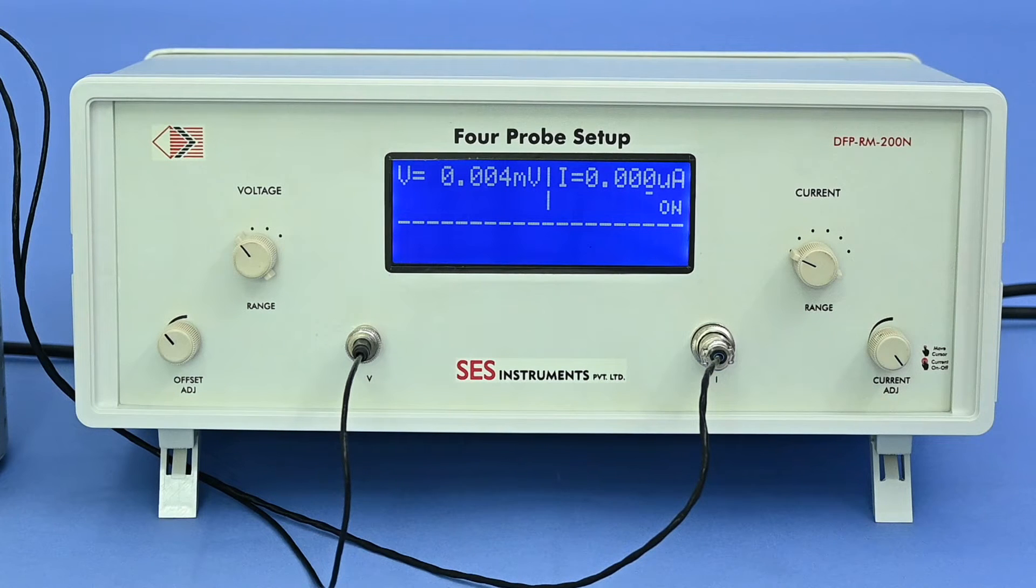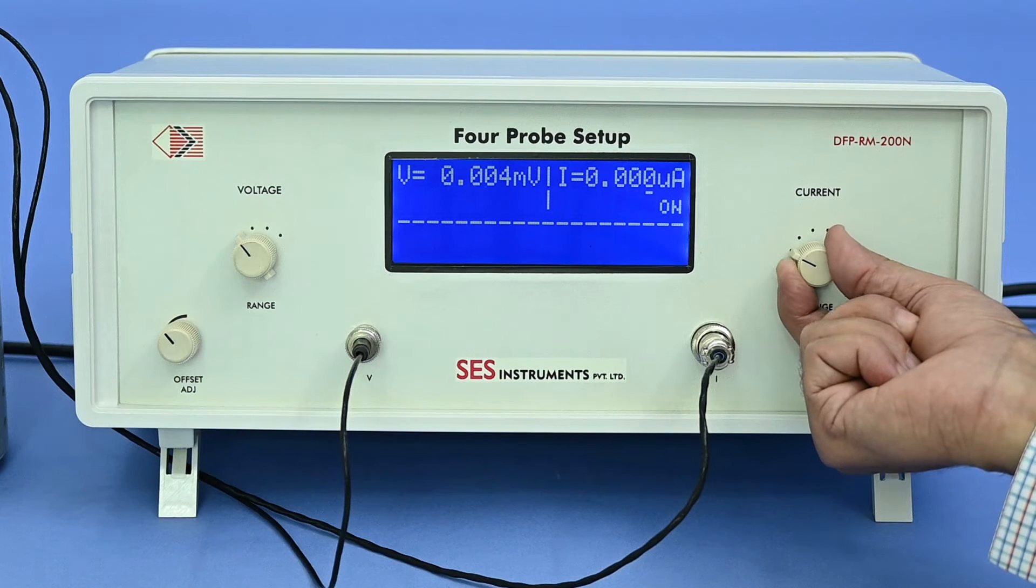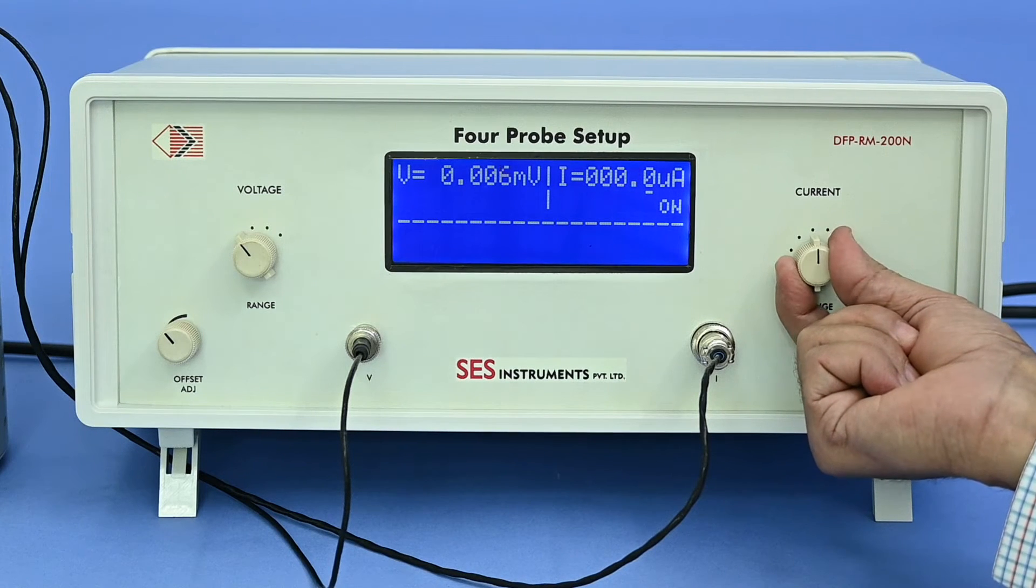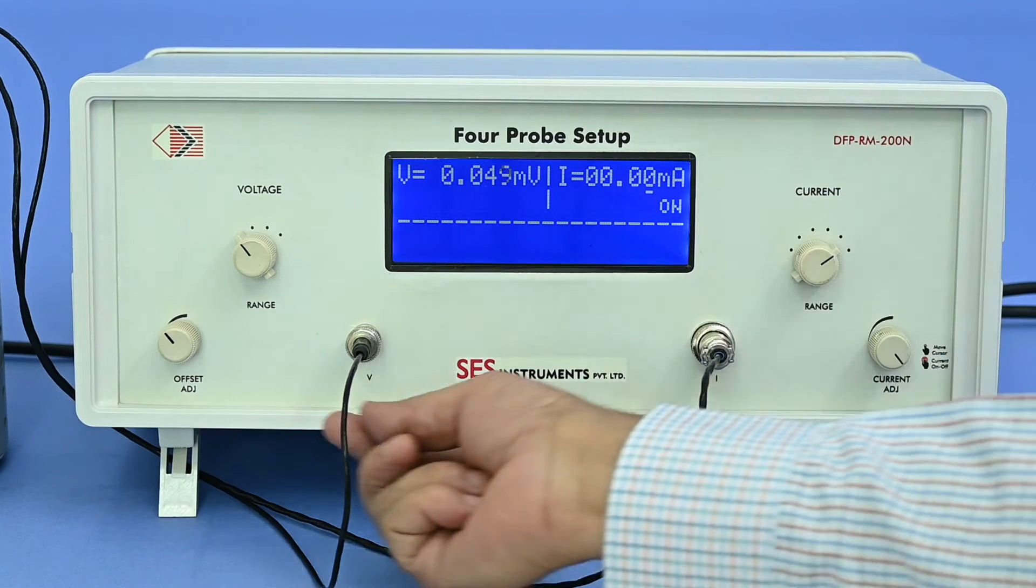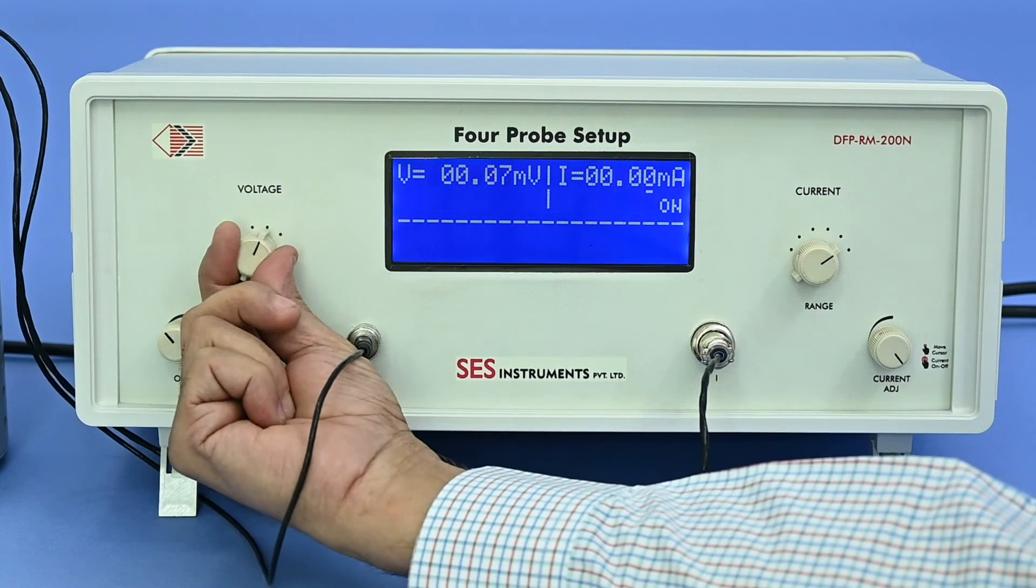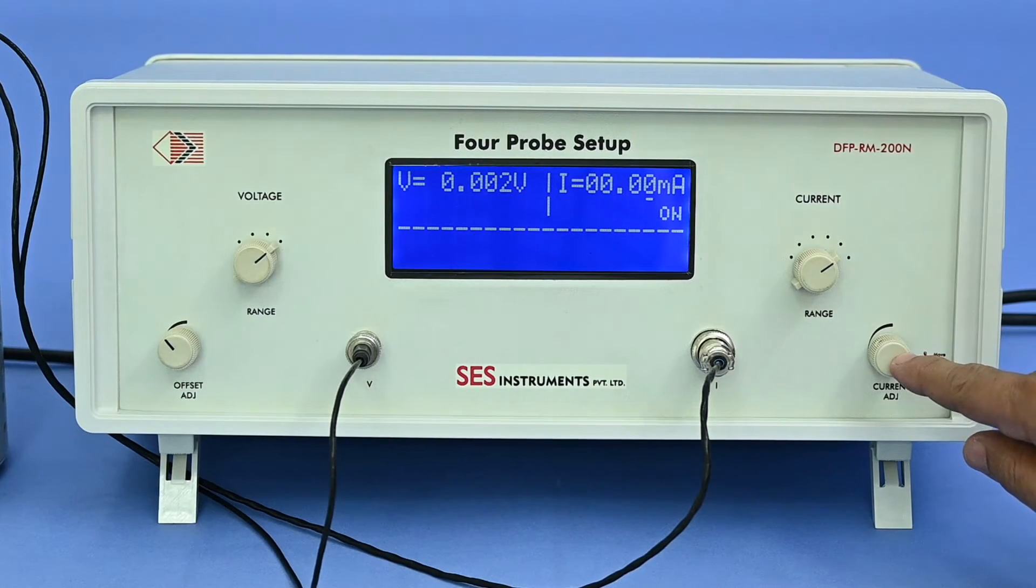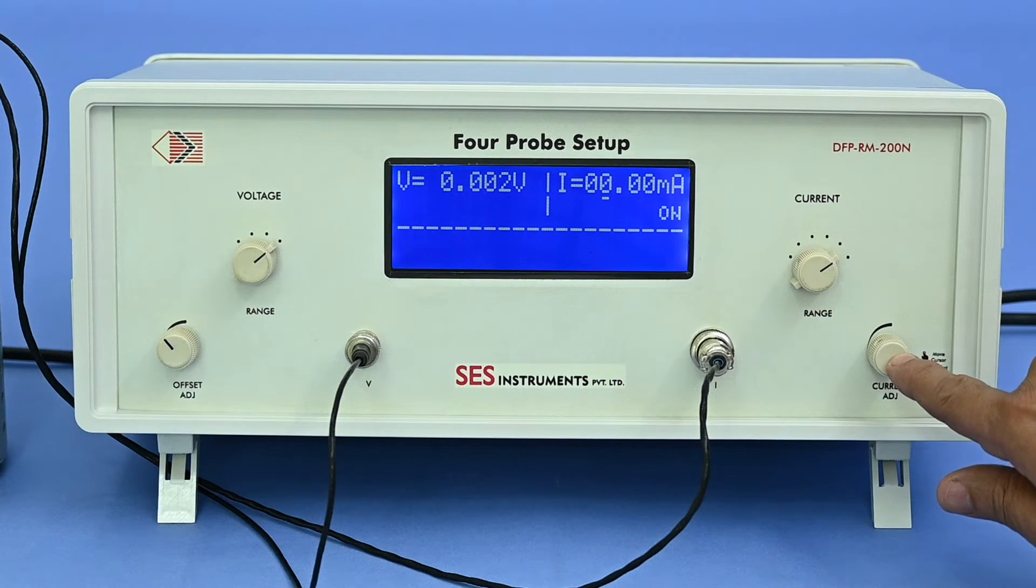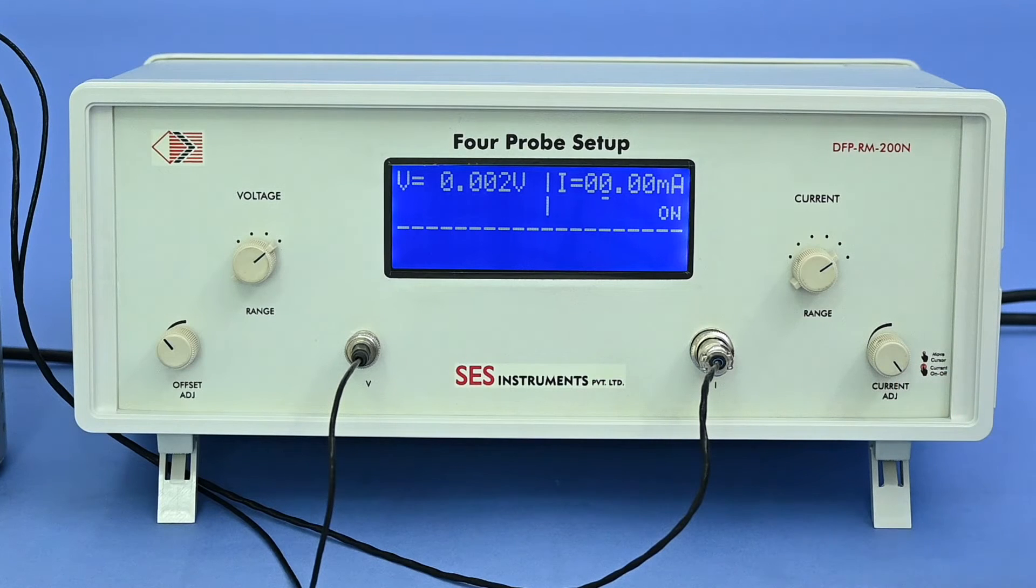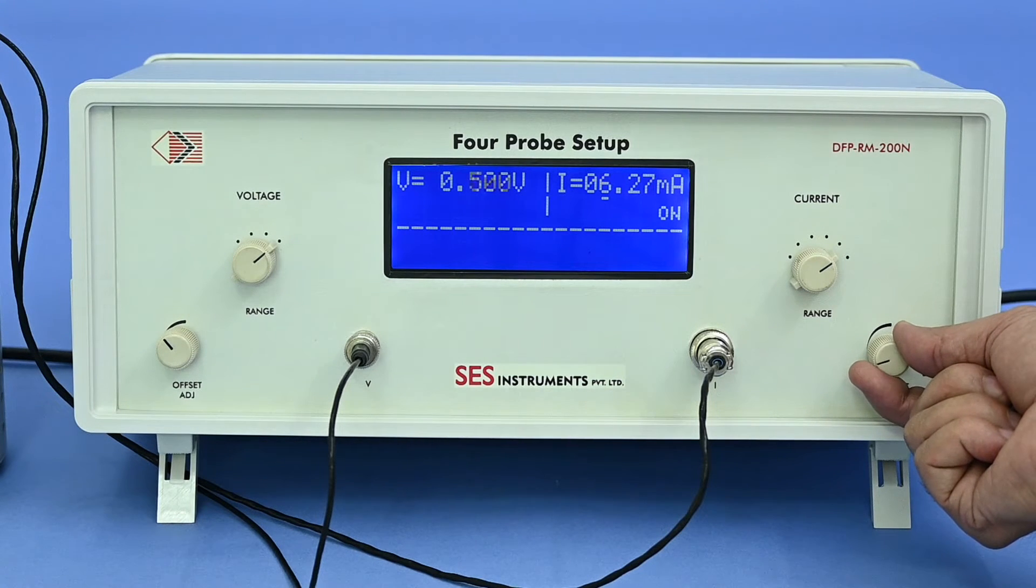Set a current, say 5 milliamps. Select a suitable range for current and voltage values. Set a required current by changing the cursor position with short press of current knob to any digit required, and set the value by rotating current knob.